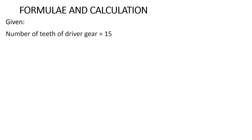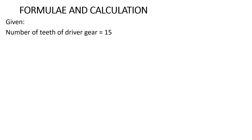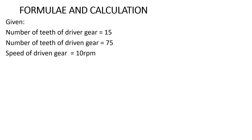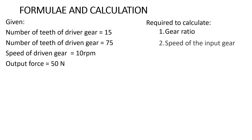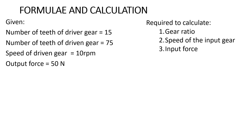Remember, we first have to write the given information. Given: the number of teeth of the driver gear is 15, and the number of teeth of the driven gear is 75. We are also given the speed of the output gear, which is 10 revolutions per minute, as well as the output force, which is given as 50 newtons. What we are required to calculate: firstly the gear ratio, secondly the speed of the input gear, and thirdly the input force.